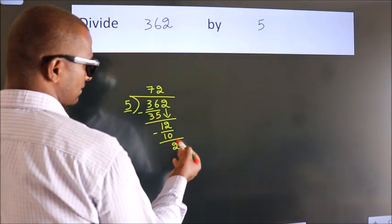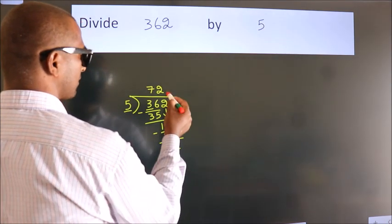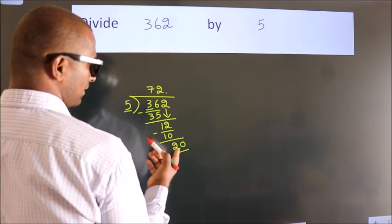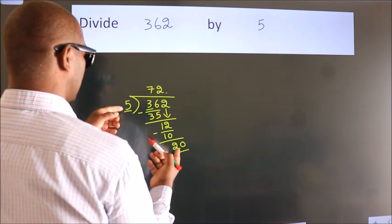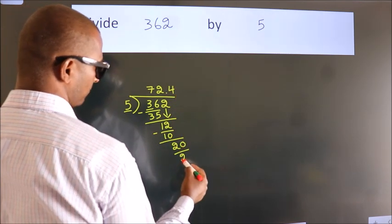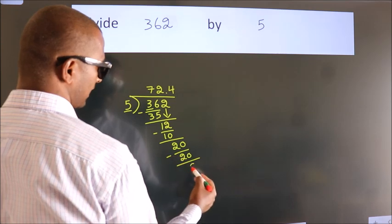After this no more numbers to bring down. So what we do is we put a dot and take 0. So 20. When do we get 20 in the 5 table? 5 times 4 equals 20. Now we subtract. We get 0.